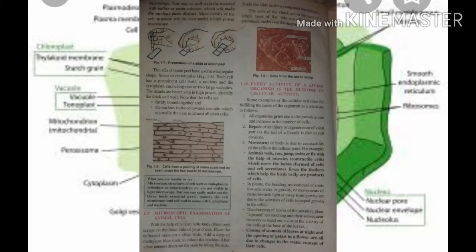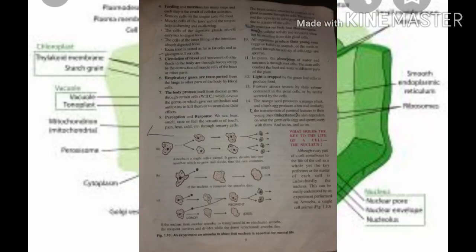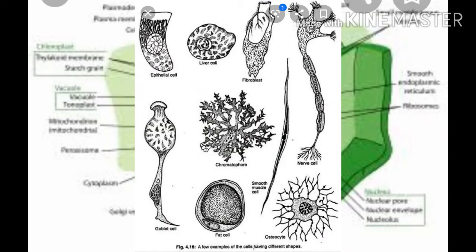Now, some examples of cellular activities for fulfilling the needs of an organism as a whole. First, all organisms grow due to growth in size and increase in the number of cells. Second, repair of an injury or regeneration of a lost part such as the tail of a lizard is due to cell division. Third, movement of the body is due to contractility of cells or cellular parts — animals walk, run, jump, swim, or fly with the help of muscles, which are contractile cells that move bones formed of cells and cell secretions. Even the feathers which help a bird to fly are products of cells.